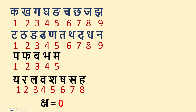The sutra says: Kaadi Nava, Taadi Nava, Paadi Panchaka, Yadyastakam, Kshashcha Kshudram. That is: from Ka — 9 letters; Ta — 9 letters; Pa — 5 letters; Ya — 8 letters. Quote them as Ka=1, Kha=2, Ga=3, Gha=4, Nya=5, Cha=6 — like this. And for example, Ya=1, Ra=2 — in alphabetical order, give the values as they are. That's all.